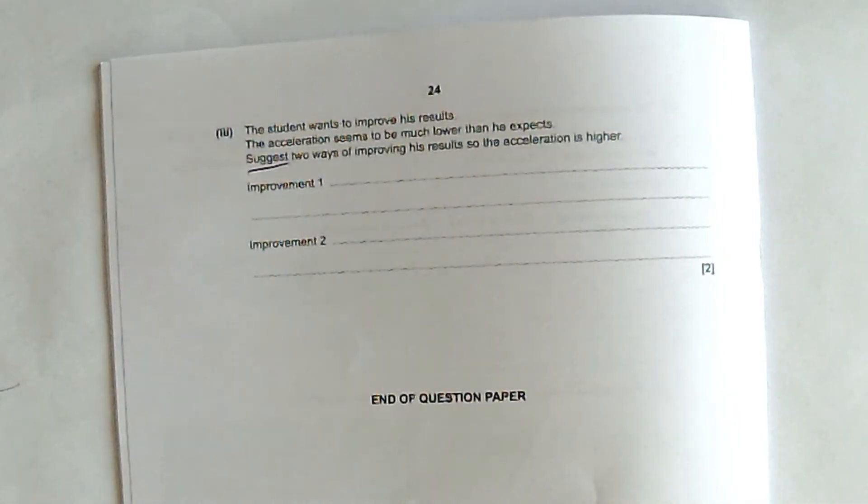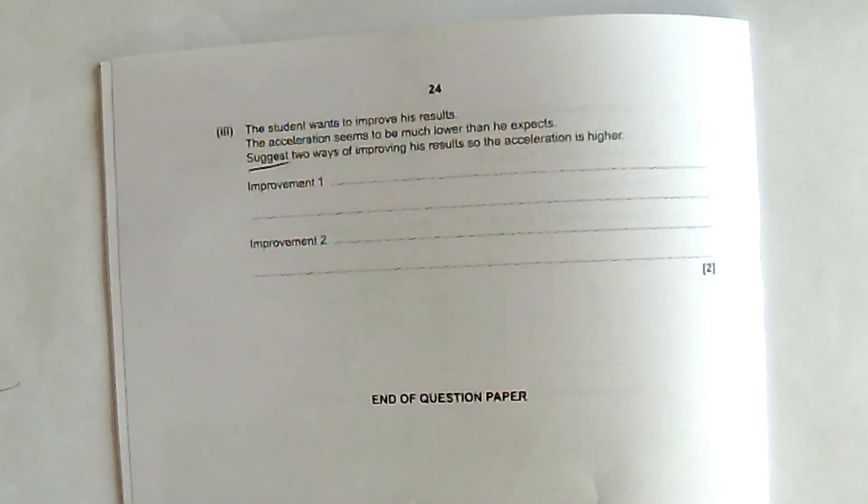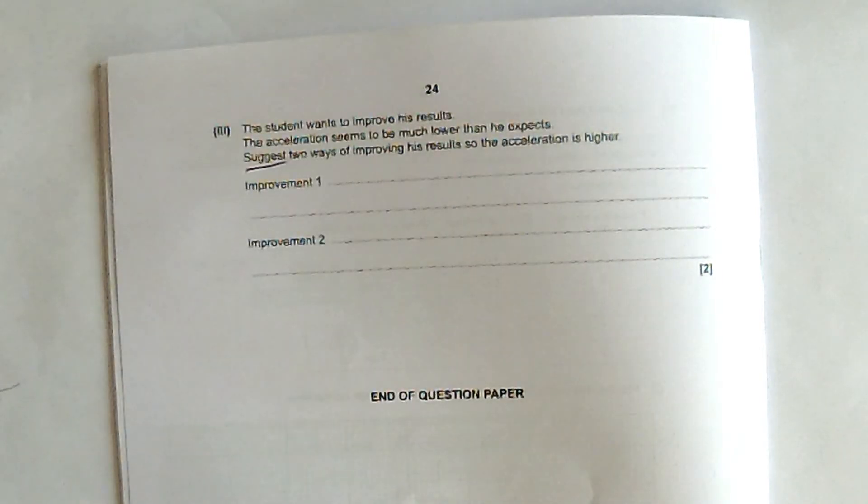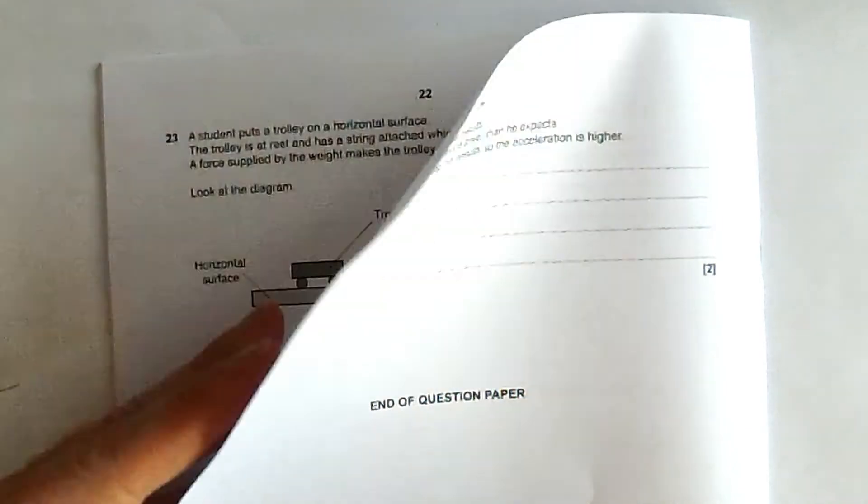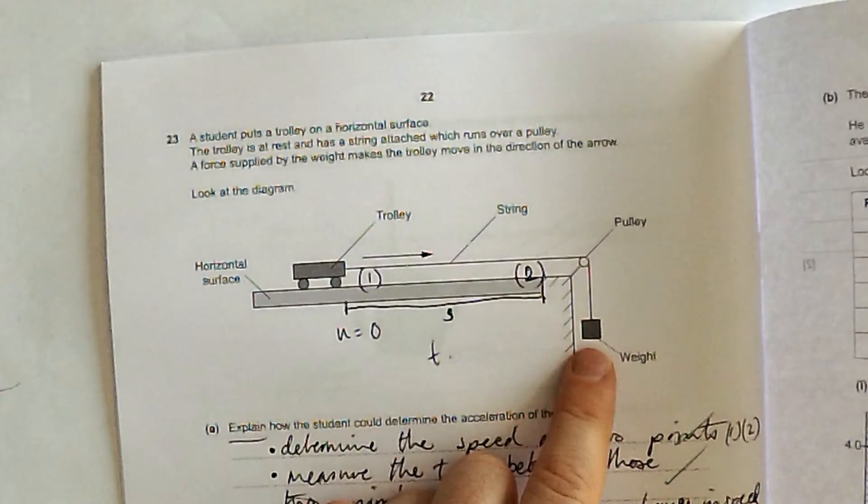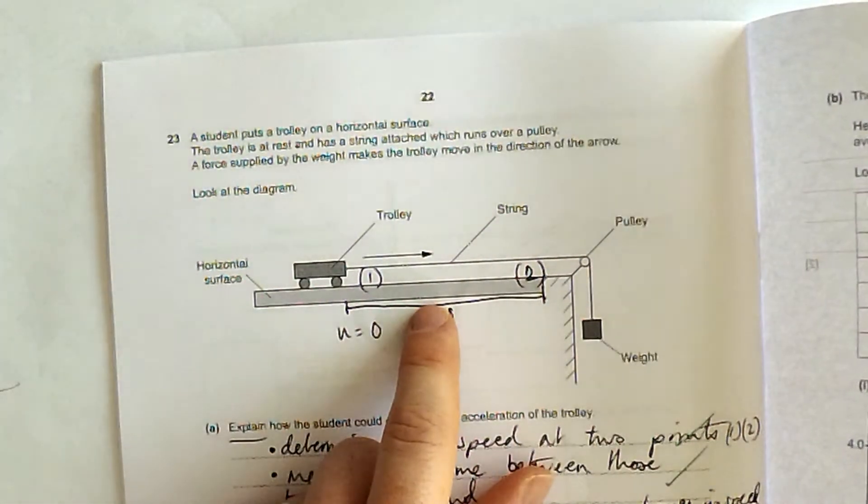Suggest two ways of improving his results. So the acceleration is higher. Student wants to improve results. The acceleration seems to be much lower than he expects. I hope you're getting the idea straight away. Acceleration is lower because possibly not all of that force, that weight that he's given, is used to accelerate the trolley.